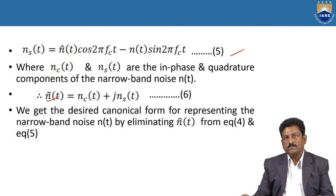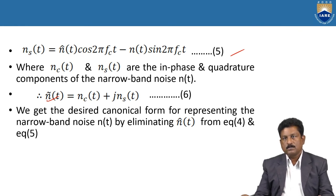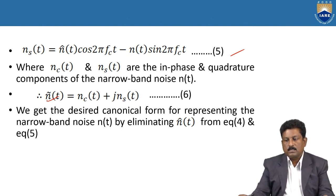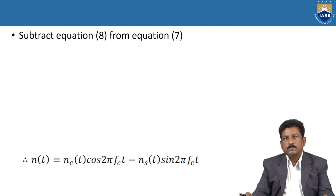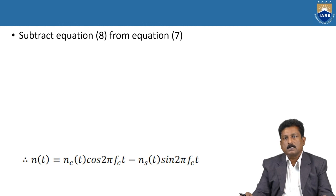So n_c(t) is the In-Phase component and n_s(t) is the Quadrature-Phase component. We get the desired canonical form of the representation of the Narrowband Noise by eliminating n̂(t) from Equations 4 and 5. Multiplying Equation 4 by cos(2πfc·t) and Equation 5 by sin(2πfc·t), and substituting, we get: n(t) = n_c(t)·cos(2πfc·t) − n_s(t)·sin(2πfc·t). These are the In-Phase and Quadrature-Phase components of the Narrowband Noise n(t). Thank you.